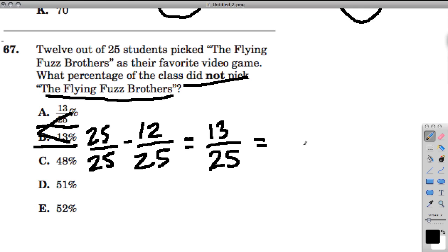A percent is always out of 100, so I'm going to rescale this relationship out of 100. I notice that 25 goes into 100 four times. So if I'm going to rewrite this fraction out of 100, I'm going to also have to multiply 13 times 4 and get 52. And there's our answer, E.